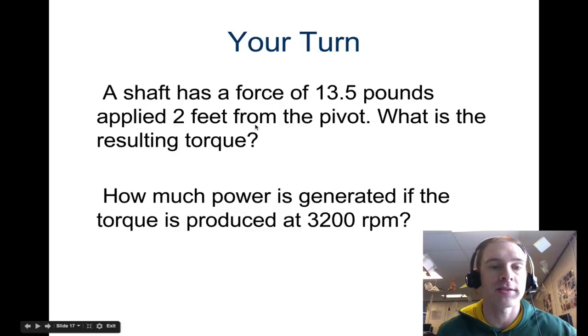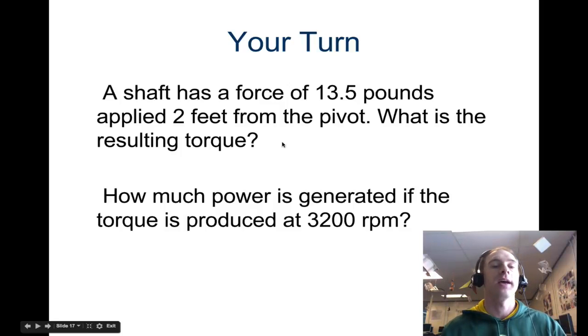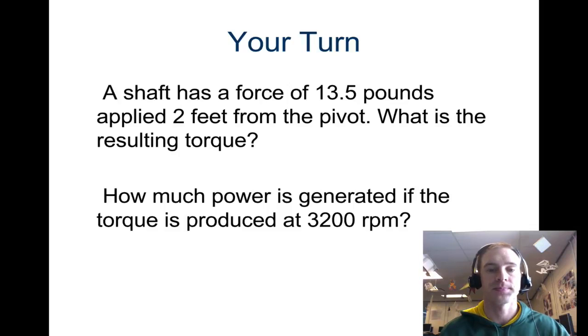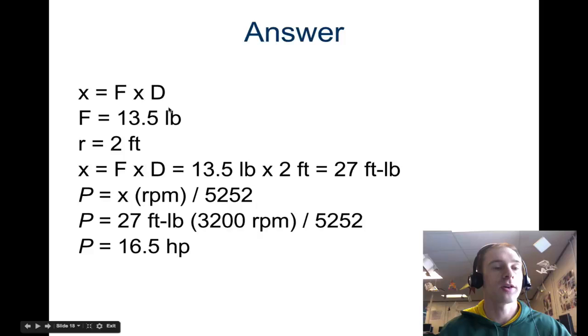All right, your turn. A shaft is 13.5 pounds applied 2 feet from the pivot. What's the resulting torque? And we're going to say that it's applied perpendicular at 90 degrees. And then the second part is how much power is generated if the torque produced at 3200 RPM. So you should have come up with force times distance. Force is 13.5. The radius of the distance is 2. So you get 27 foot-pounds of torque. And then power, equation for power is torque times RPM divided by 5252. So we substitute 27 for torque there. It said 3200 RPM was the given for us. And we divide that, we get 16.5 horsepower.